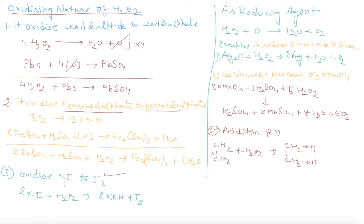In the same fashion, KI to I2. 2KI plus H2O2 gives 2KOH and I2.